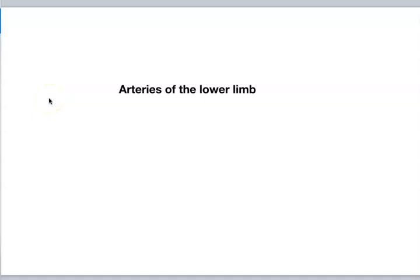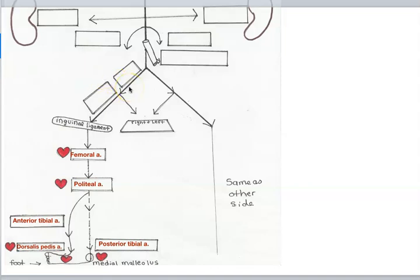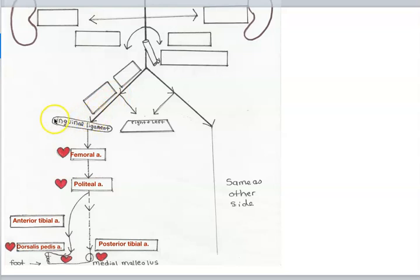We're now moving on to the arteries of the lower limb. I'm going to show you a blood flow diagram to give you the general idea of the pattern of blood flow to the lower extremity. Here we have the end of the abdominal aorta, then the common iliac artery, then the external iliac artery, which passes under the inguinal ligament to enter the lower limb.